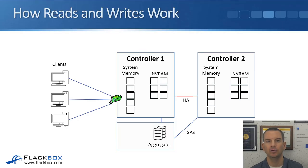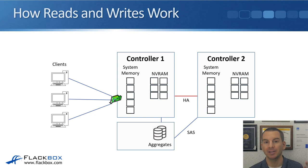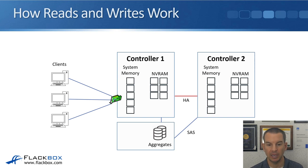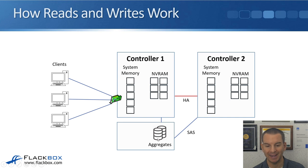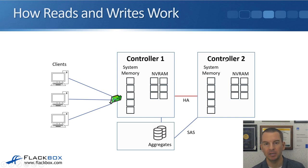I'll explain how reads and writes work first, and the best way to explain this is by working through an example. In the diagram, we have two controllers — Controller 1 and Controller 2 — and our clients are going to be sending reads and writes to Aggregate 1, which is owned by Controller 1. Controller 2 is the high-availability peer for Controller 1 and that aggregate.